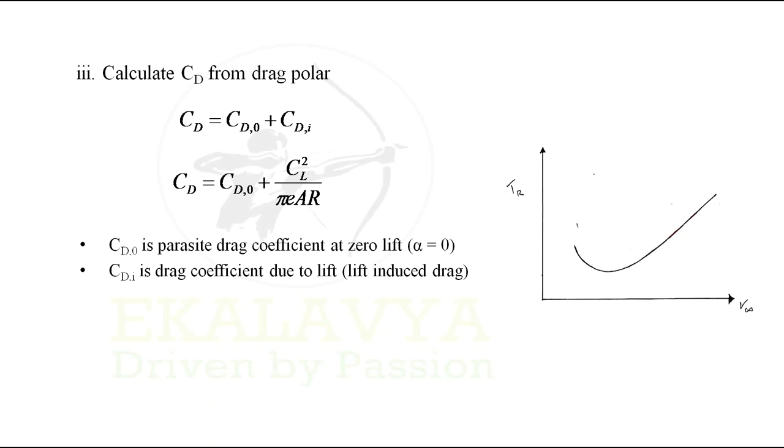CdI is drag coefficient due to lift, that is lift induced drag component. E is Oswald efficiency factor. AR is aspect ratio.